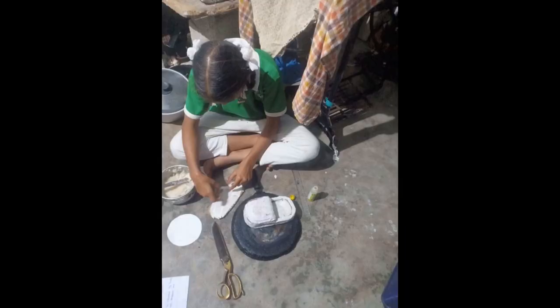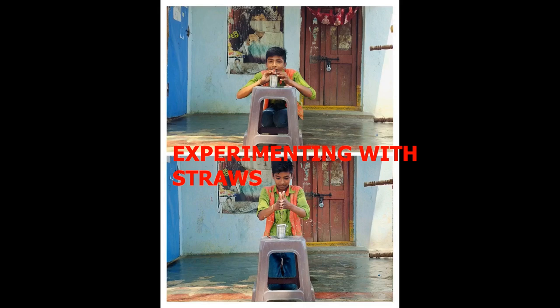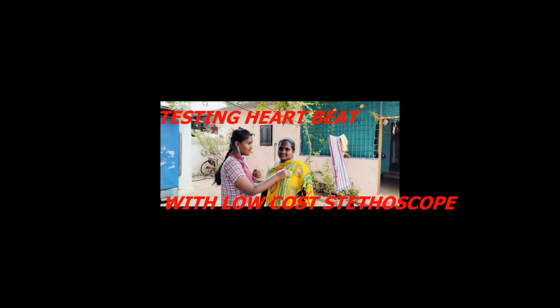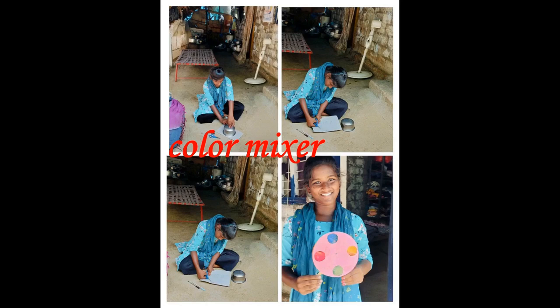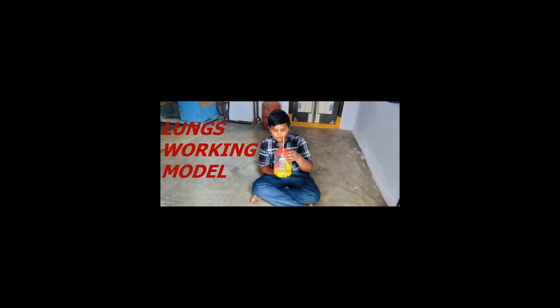My students not only experiment in school but also at home. Jashwant, a seventh class student, is doing an experiment on how much air we breathe in one go. Ganesh, also seventh class, is experimenting with straws. Eighth class student Renu is recycling paper. Eighth class student Vaishnavi is making litmus paper with hibiscus flower and testing her mother's heartbeat with a low-cost stethoscope she prepared. Triveni prepared a colour mixer. Ninth class student Vimala prepared plant and animal cells. Sixth class student Charanram prepared a lungs working model.